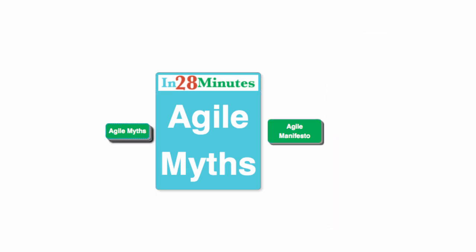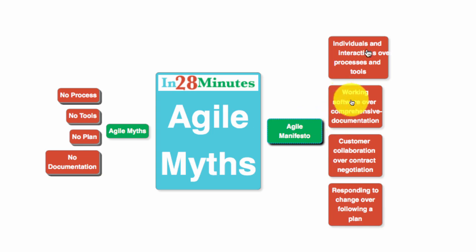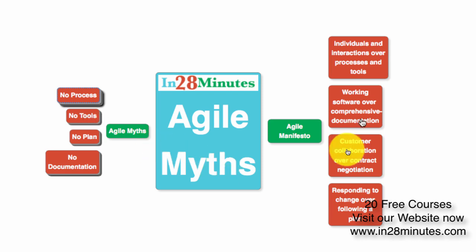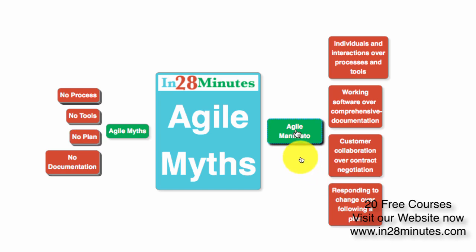But there are a few Agile myths which come based on what's in the manifesto. The manifesto says individuals and interactions over process and tools — that does not really mean there are no processes or tools. Working software over comprehensive documentation — that does not mean no documentation. Responding to change over following a plan — that does not mean no plan. It means that a detailed one-year plan is not really important; focus on responding to change with a flexible plan. Let's discuss each of these myths in detail.